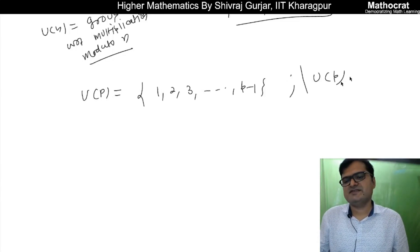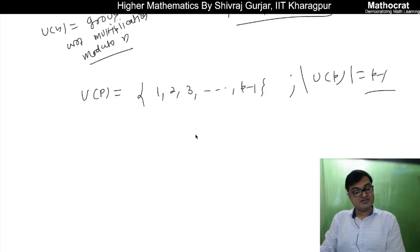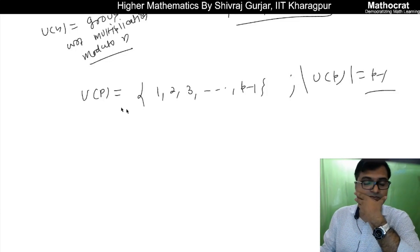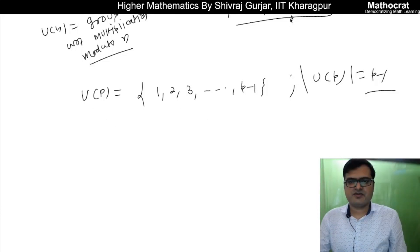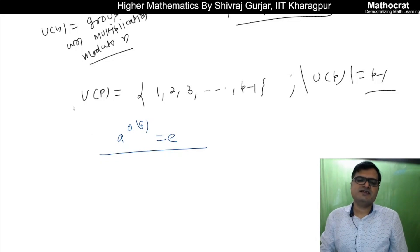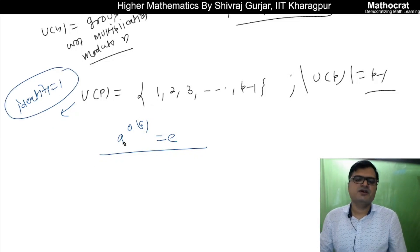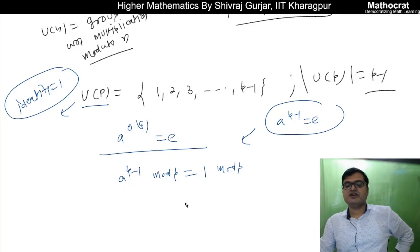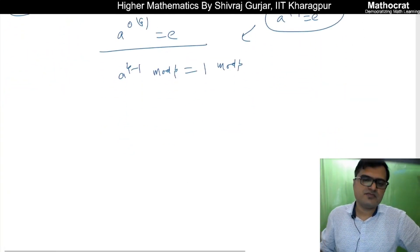This is a group with respect to multiplication modulo p operation. All elements in U(p) are relatively prime to p. We proved that a^(order of G) equals identity. The identity here is 1 modulo p. So a^(order of G), where order of G is order of U(p) which is p-1, that should be 1 modulo p. This is nothing but a^(p-1) equals e, but mod p operation is happening here.